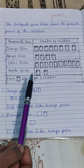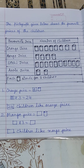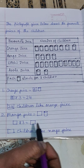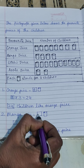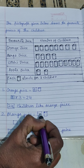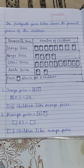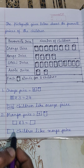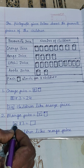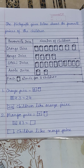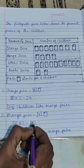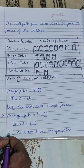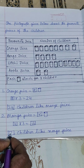Now see mango juice. How many cans are there? 4. So mango juice is equal to 4 cans. Write 4 over here. And then, 4 cans — to get the number of children, what will you do? You will multiply 4 by 3. So 4 multiplied by 3, the answer will be 12.